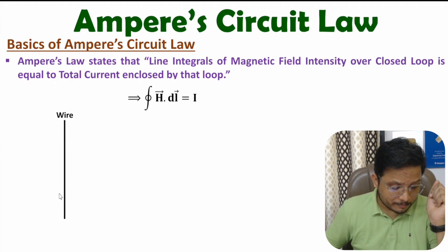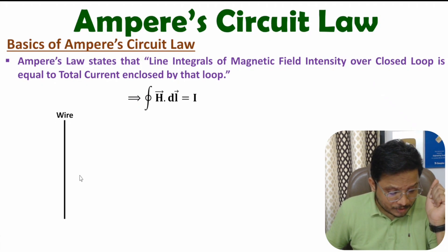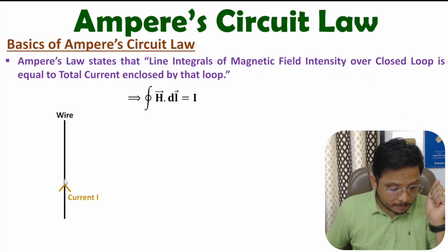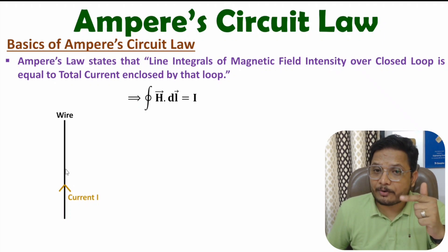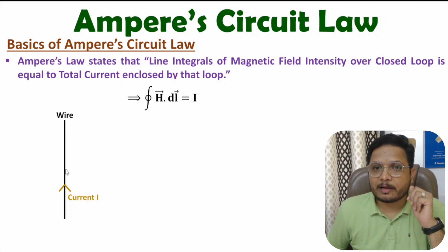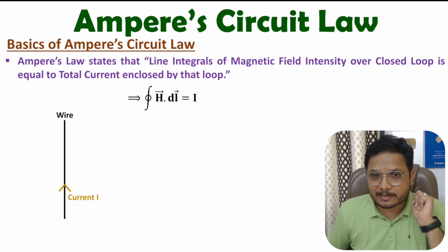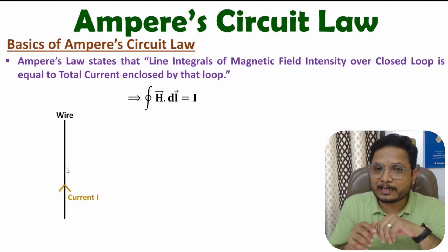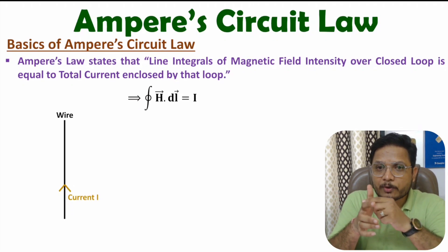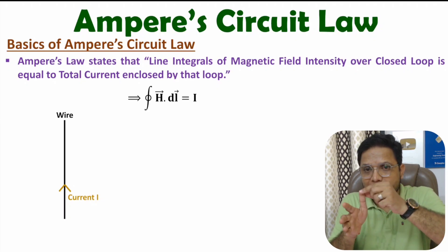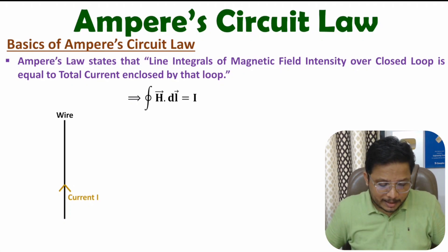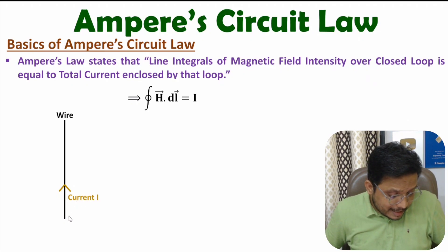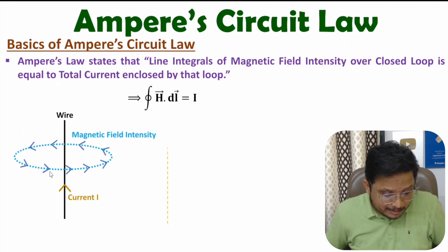Let us consider one wire over here. Through this wire, let us assume current I is passing in the upward direction. Because of current I, there will be magnetic field intensity. In my last video, I explained the Biot-Savart law, and based on that one can understand the direction of magnetic field intensity. As per the right-hand thumb rule, if you keep your thumb in the direction of current, then the rotation of your fingers gives the direction of magnetic field intensity.